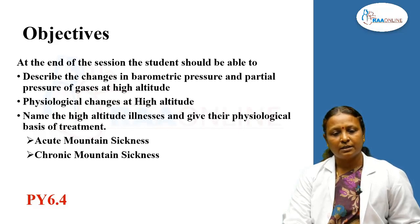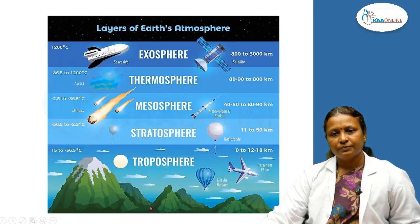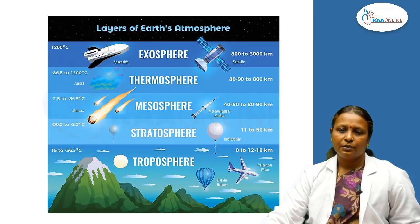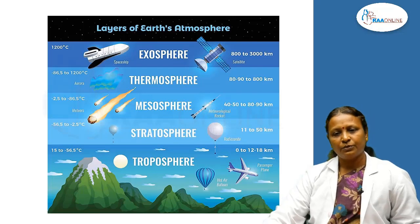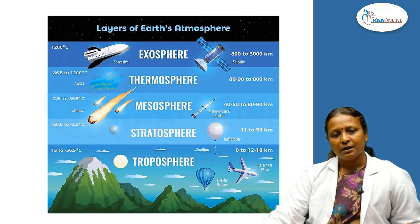This comes under the competency PY 6.4. These are the layers around the earth, called the atmosphere. The troposphere is the segment in which human activities occur; beyond that there is not much human activity. You can see the aeroplane flying within this zone, and the peaks of almost all mountains are well within this zone.